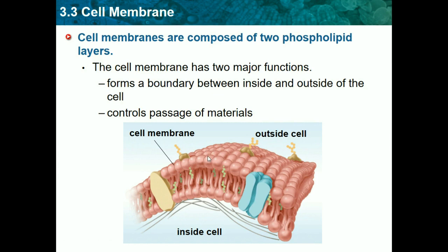We also learned about phospholipids in a previous chapter on carbon-based molecules, and we know they're a type of fat. They create this layer, which is the cell membrane, and it chooses what comes in and out of the cell. It's called semi-permeable, and it chooses what enters and what leaves.